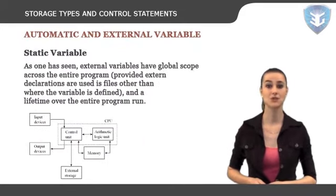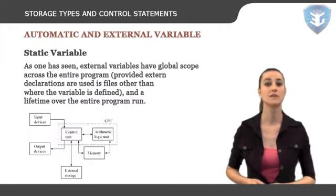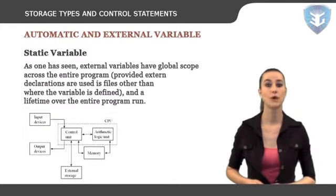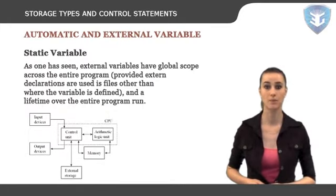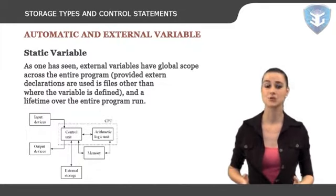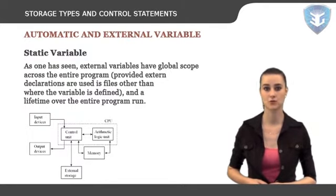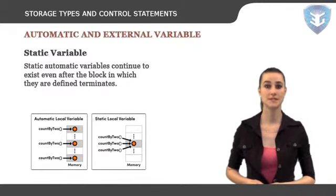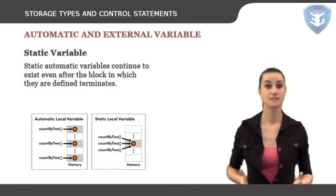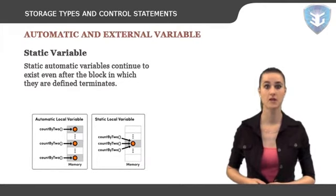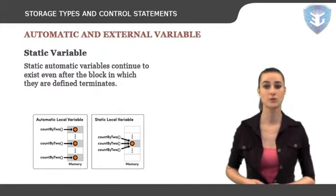External variables have global scope across the entire program and a lifetime over the entire program run. The static storage class similarly provides a lifetime over the entire program, but provides a way to limit the scope of such variables. Static storage class is declared with the keyword static. These variables are automatically initialized to zero upon memory allocation. Static automatic variables continue to exist even after the block in which they are defined terminates, so the value of a static variable in a function is retained between repeated function calls. The storage allocated becomes permanent for the duration of the program.